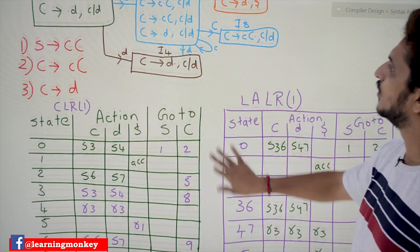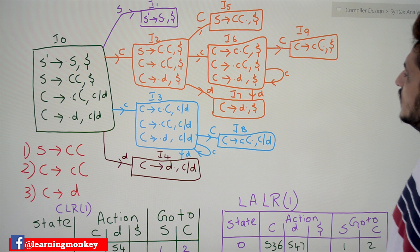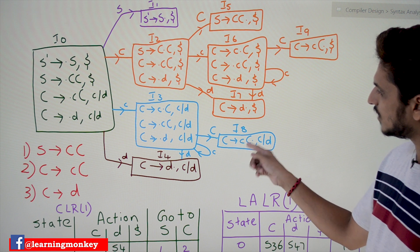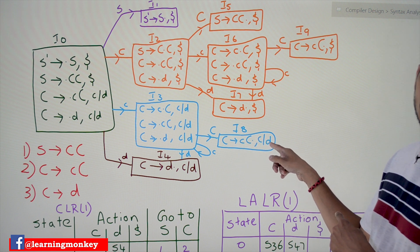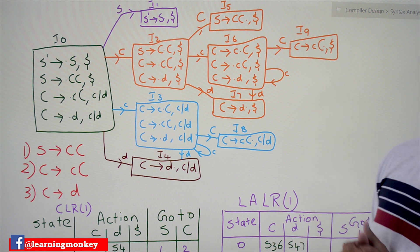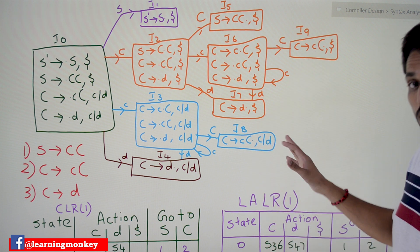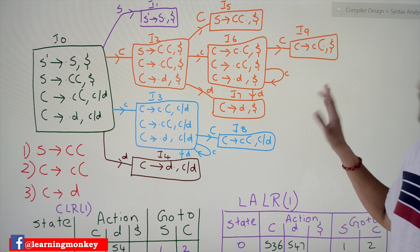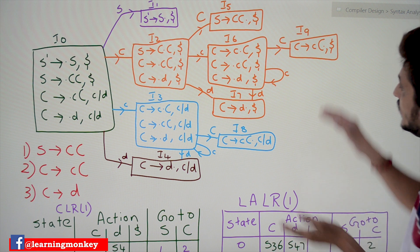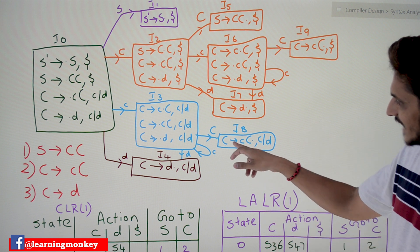So what we are doing in LALR — Look-Ahead LR(1) — parsing table: take a look at i8 and i9. In i8, capital C tends to small c capital C dot, and the look-ahead symbols are c or d. In i9, capital C tends to small c capital C dot, and the look-ahead symbol is dollar. These two states are showing the same production but different look-ahead symbols.